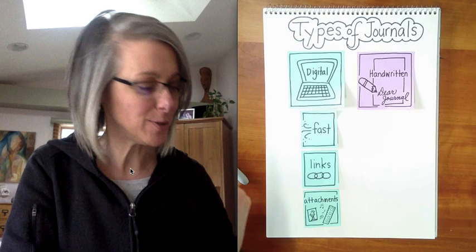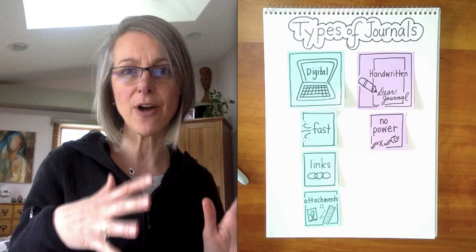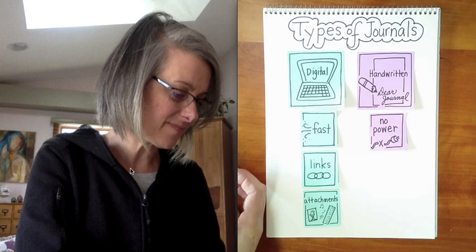Now the thing about handwritten journals, there's some really cool things about them as well. One of the really cool things is that you don't need power. No power needed for a handwritten journal. You can just tuck it under your arm, find a spot inside or outside. You don't have to worry about anything being charged and you can begin to record your thoughts.